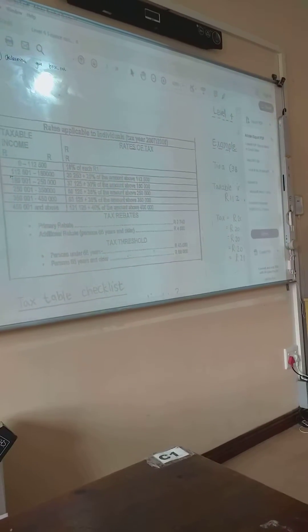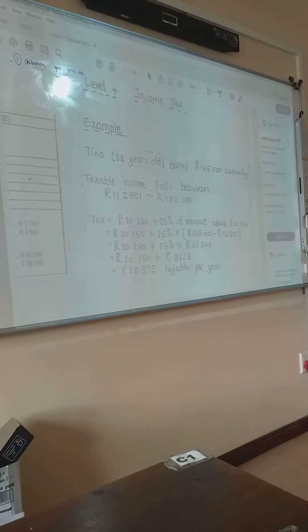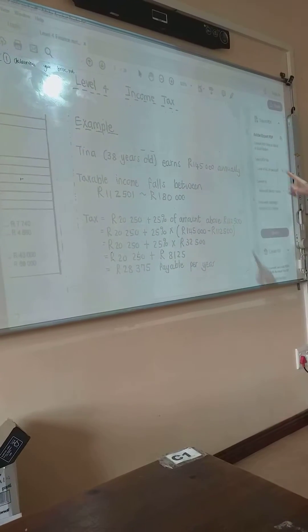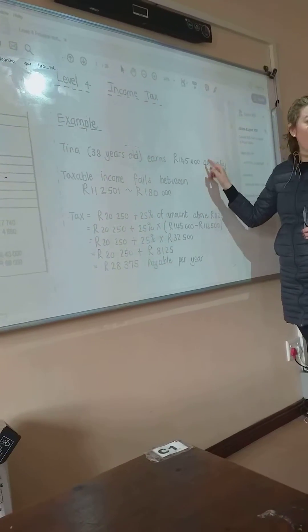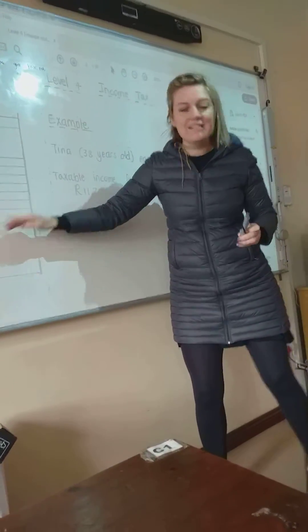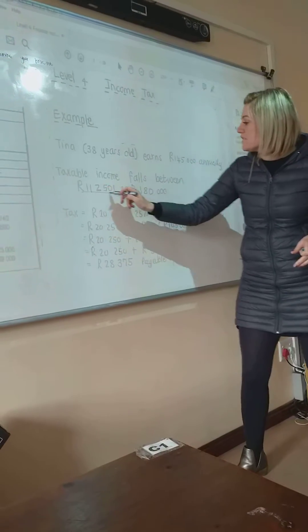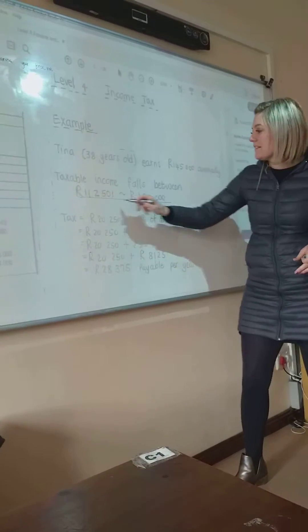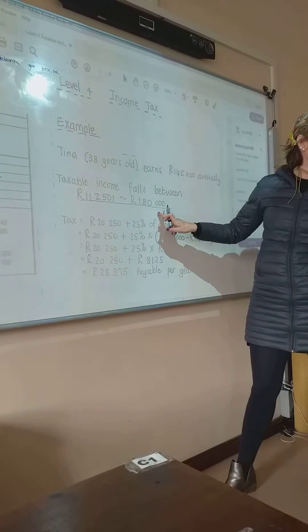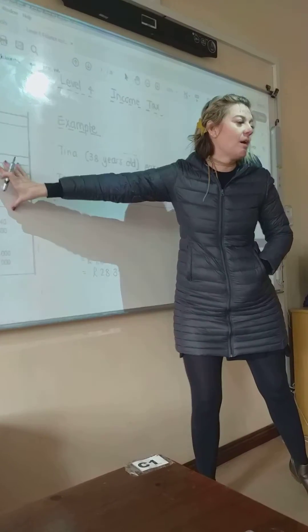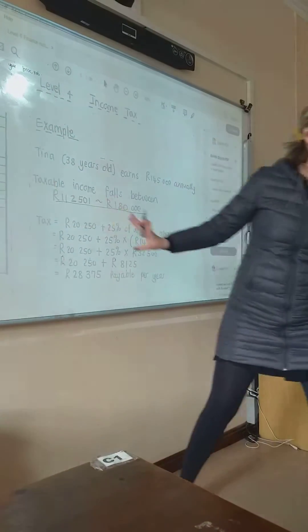So let's do the example. I'm going to take the board back to this side. So they say that Tina earns 145,000. According to the bracket, you would see that it falls into this little bracket in between 112 and 110. Are you with me? I'm not going to take it back to the table now, but do you understand where we get that from?